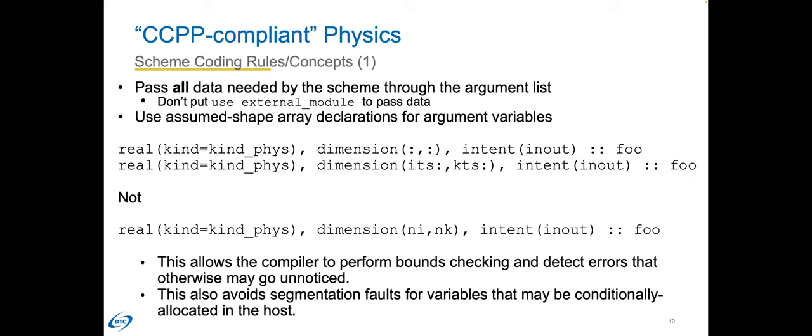Next is to use assumed-shape array declarations for argument variables. This allows the compiler to perform bounds checking and detect array size errors. Also, it's possible and likely in NOAA models that some arrays are conditionally allocated in the host. As long as the scheme checks and doesn't use unallocated arrays inside the scheme, supported Fortran compilers won't throw an error if null pointers are passed in, as long as the arrays are declared as assumed-shape internally. Using explicitly-shaped arrays is totally fine for arrays that are local to a scheme and not in the argument list.